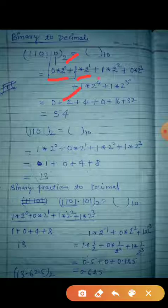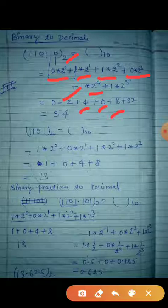Next: 1 into 2 to the power 2. 2 to the power 2 means 4. So 4 into 1 equals 4. Plus — remember, any number multiplied by 0 will be 0. 2 to the power 3 means 8. So 8 into 0 equals 0. Plus, 1 into 2 to the power 4: 2 to the power 4 means 16. So 16 into 1 equals 16. Plus, 2 to the power 5 means 32. So 32 into 1 equals 32.